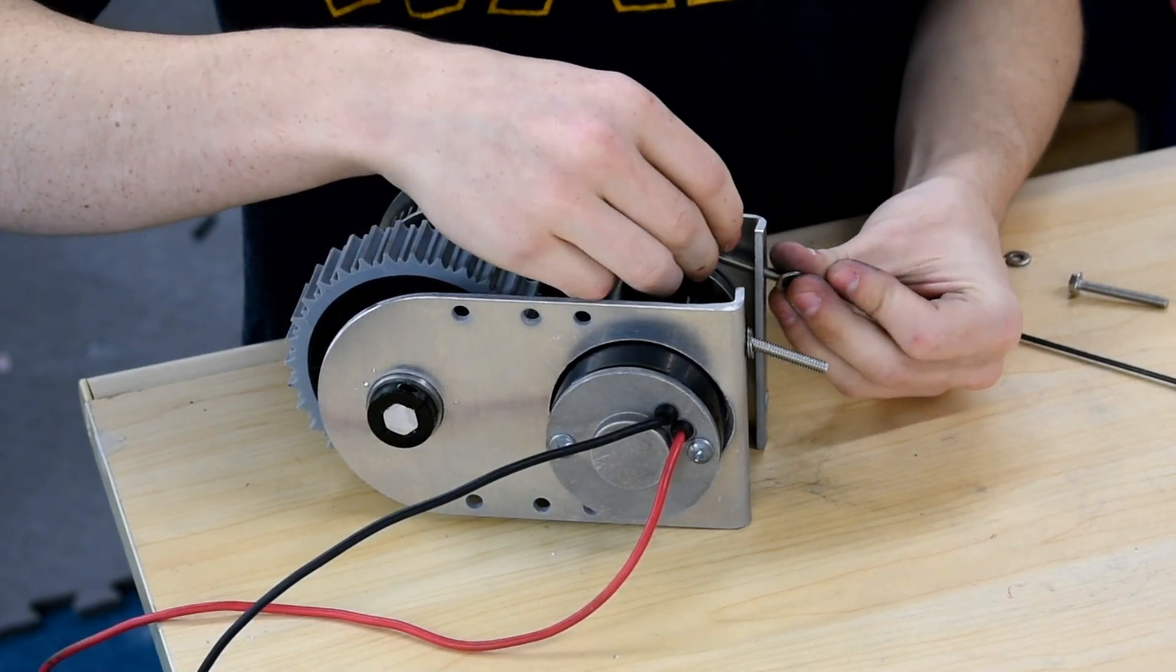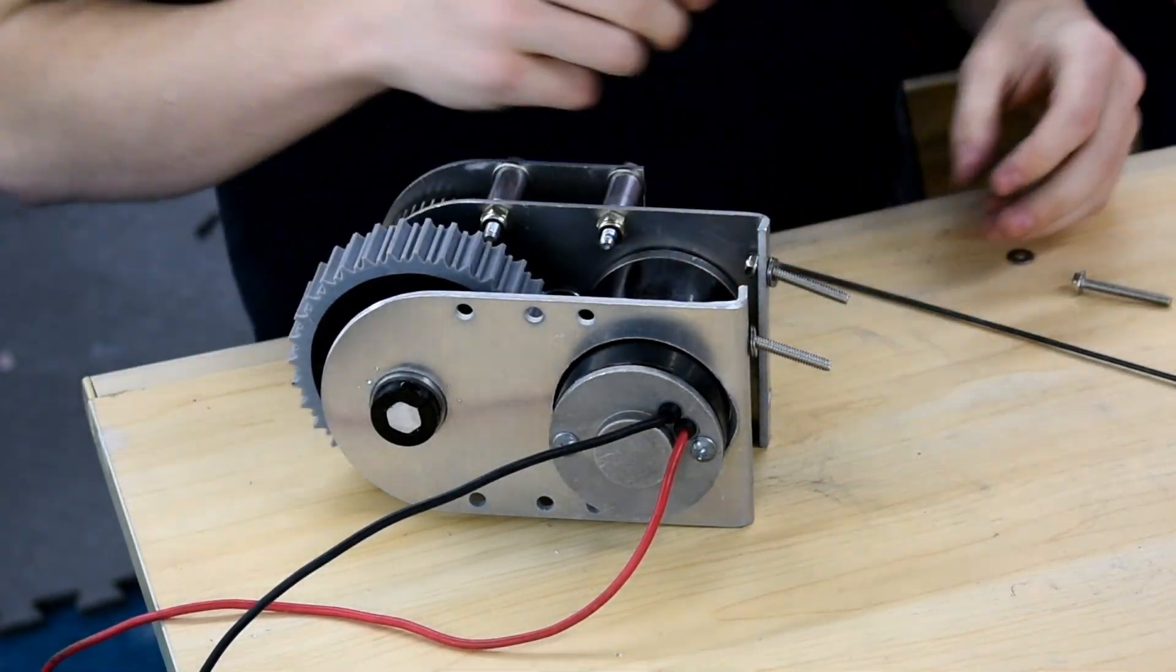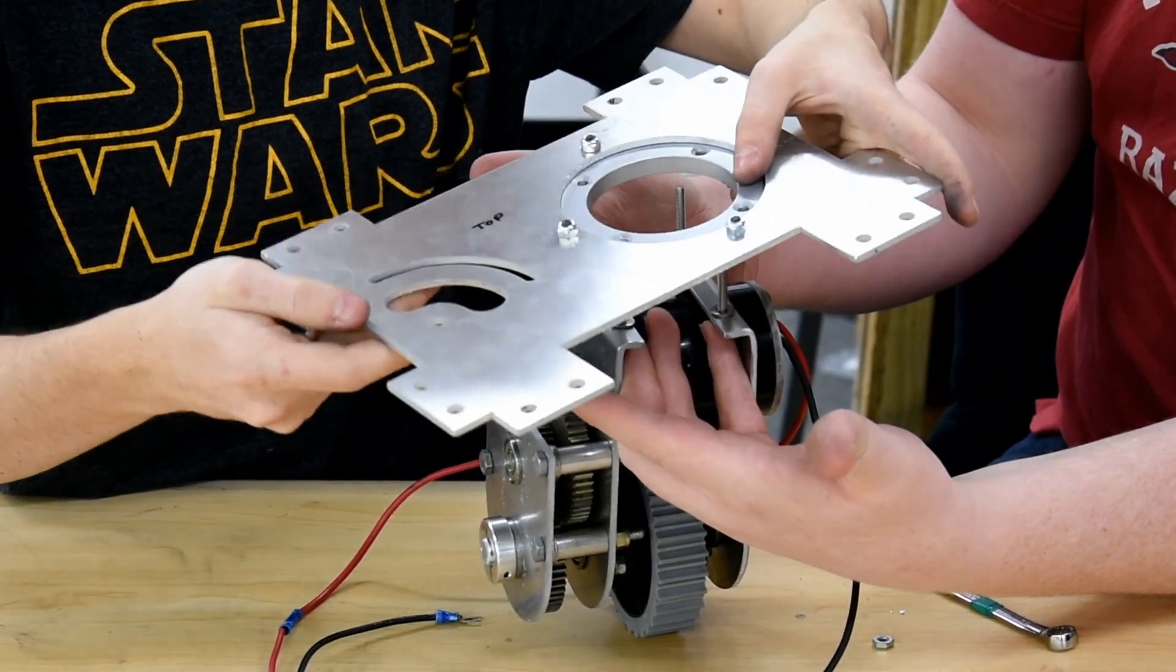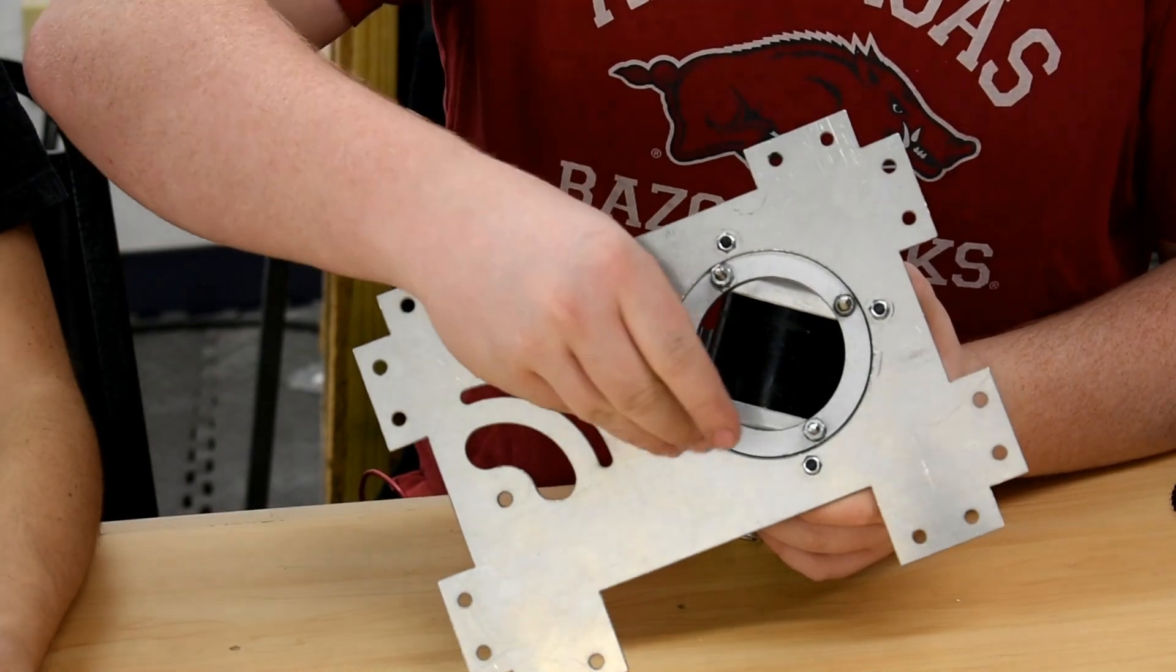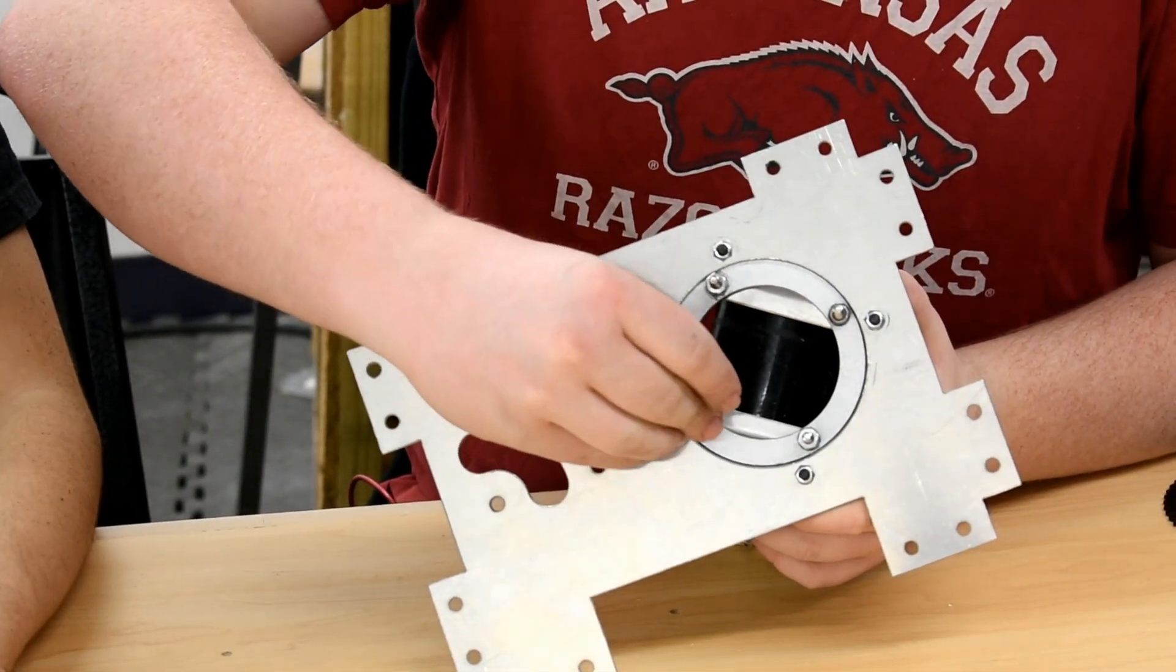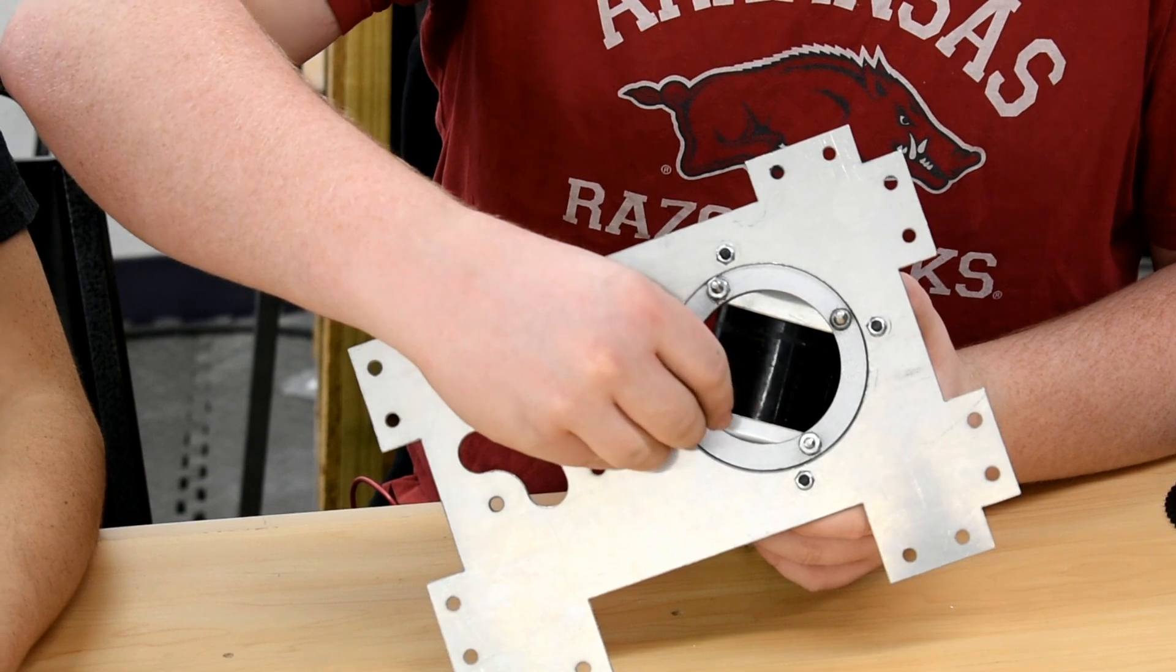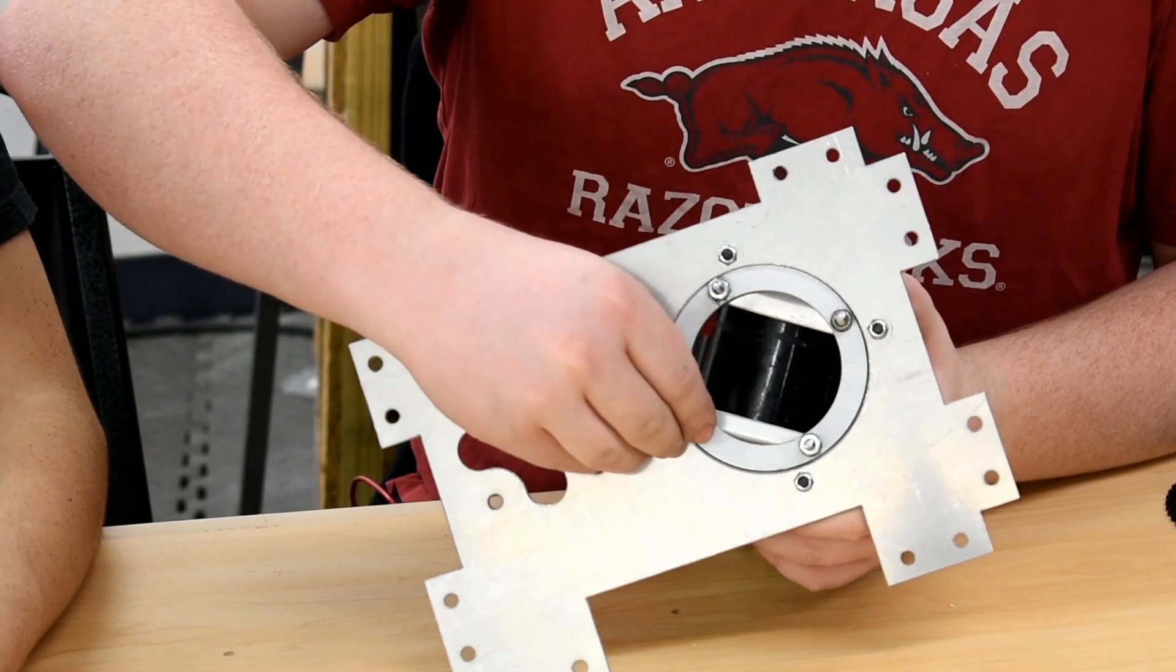Mount the lower gear assembly to the lazy susan using 1-1/2 inch 10-24 screws and lock nuts. Placing a couple washers in between the lower assembly and the lazy susan helps with clearance. Place two regular nuts on top of the lock nuts to give some spacing for the 60 tooth sprocket.